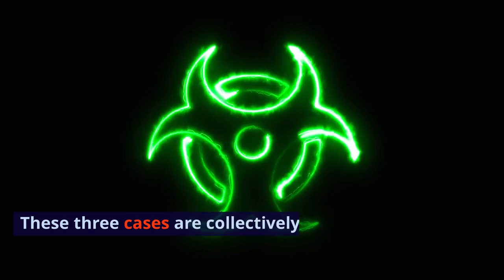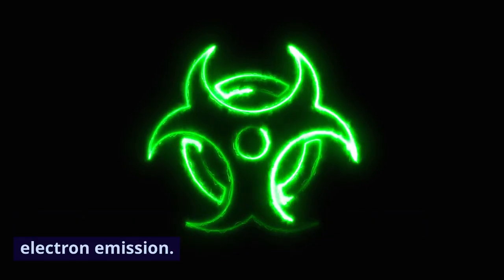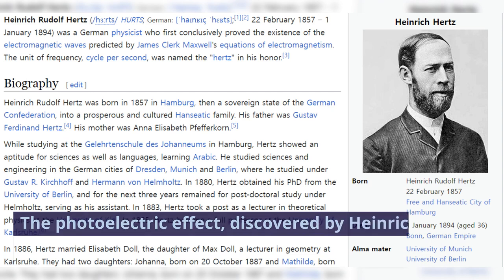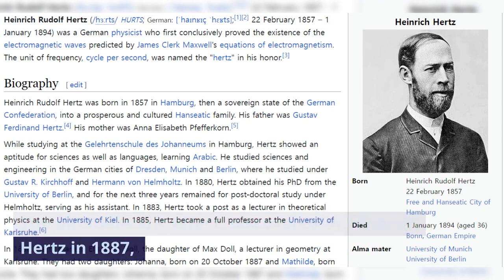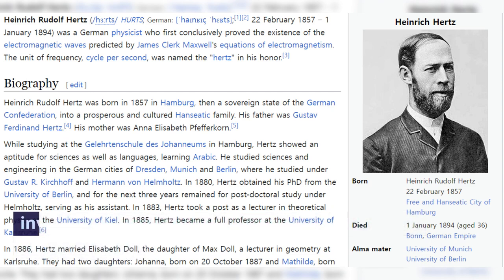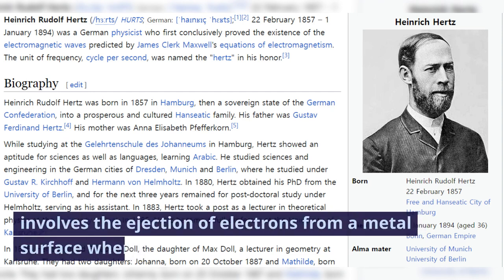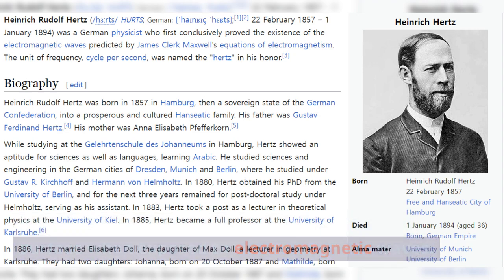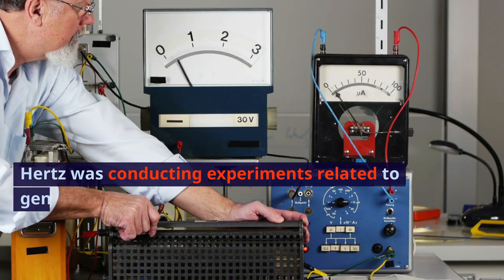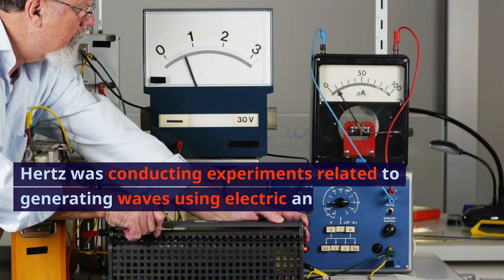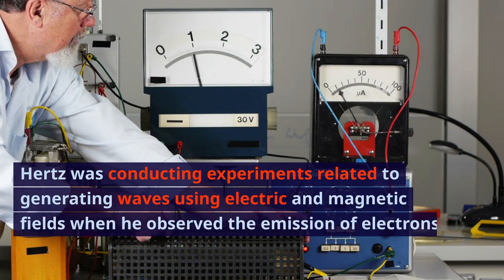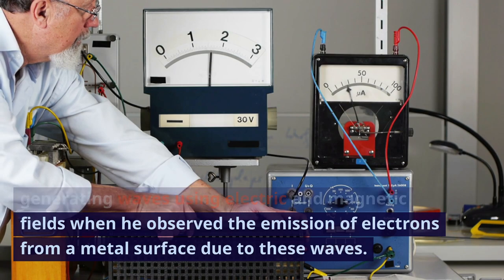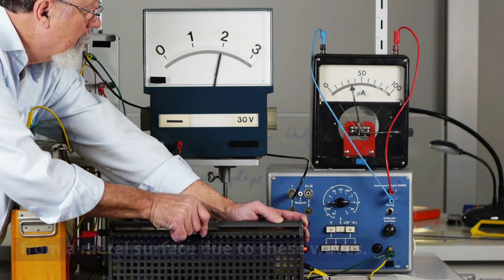These three cases are collectively referred to as electron emission. The photoelectric effect, discovered by Heinrich Hertz in 1887, involves the ejection of electrons from a metal surface when exposed to electromagnetic waves. Hertz was conducting experiments related to generating waves using electric and magnetic fields when he observed the emission of electrons from a metal surface due to these waves.